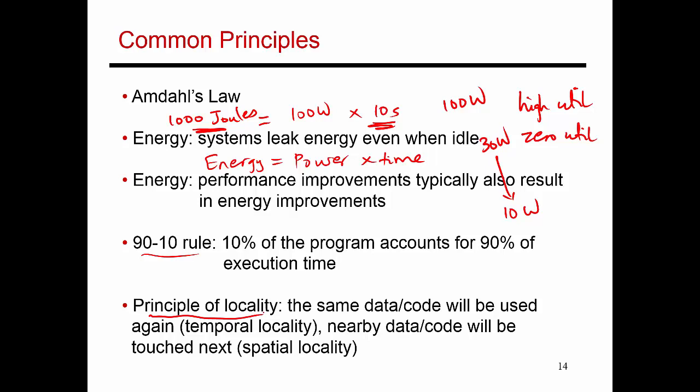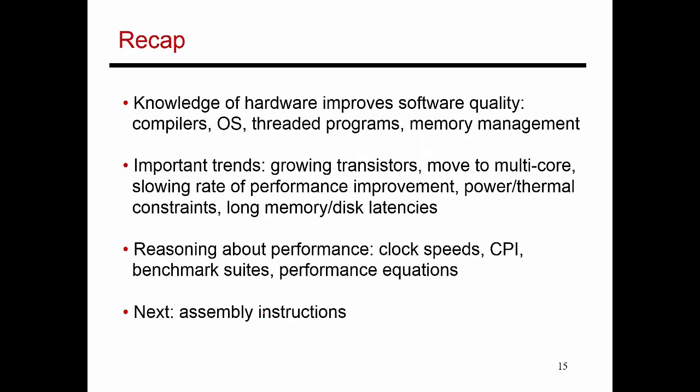Having covered these common principles, let me do a quick recap. So far I've motivated the course and explained why both computer science and computer engineering majors need to understand hardware design — knowledge of hardware helps you write better software, multi-threaded programs, manage the memory system, and write compilers and operating systems. We've talked about Moore's Law and its decline, the power wall, and how to reason about performance — measuring execution time broken down into the number of instructions, clock length, and cycles per instruction. In the next set of videos, we'll start looking at assembly instructions and instruction set design.